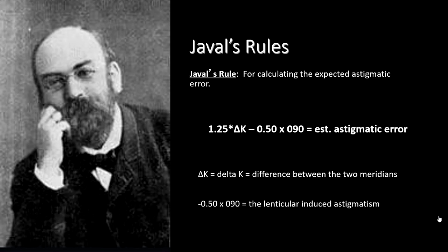Javal's rule, the initial one, not the simplified one, was first estimated back in the late 1800s, and it was a simple rule which is you took the difference in the corneal planes, the corneal astigmatism, and you took it times 1.25, then subtracted out a half diopter against the rule.